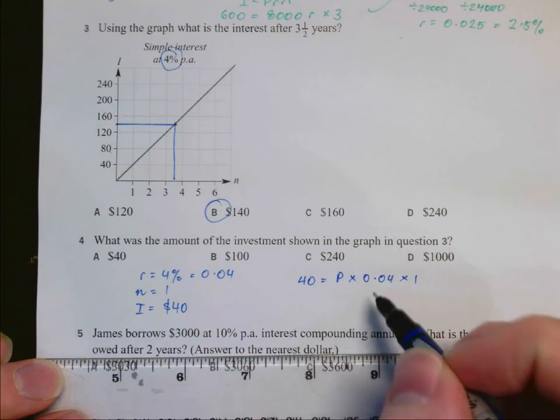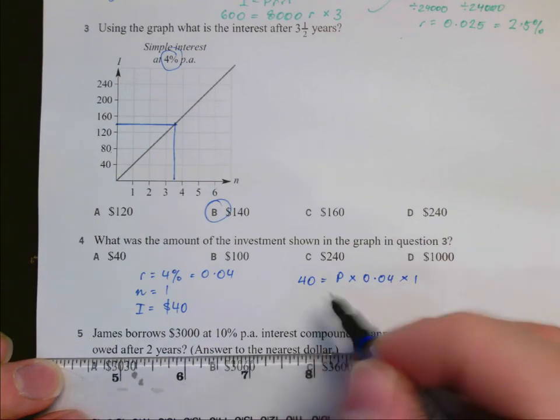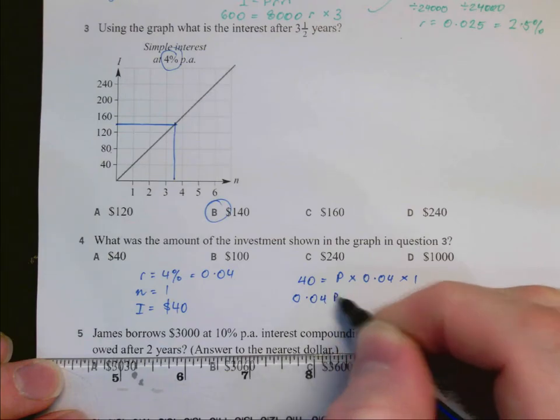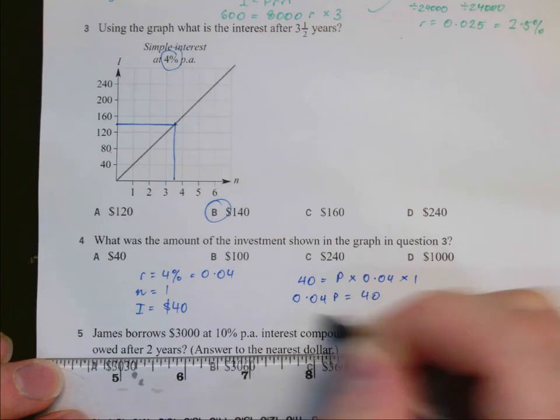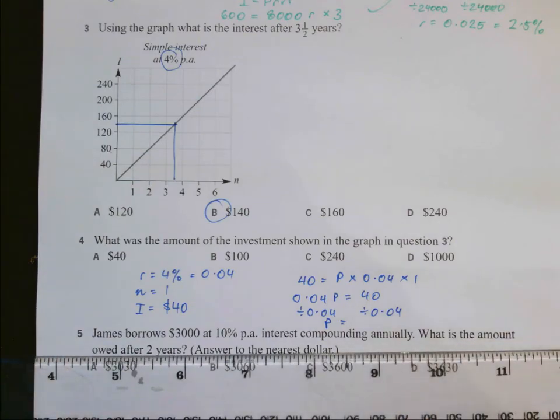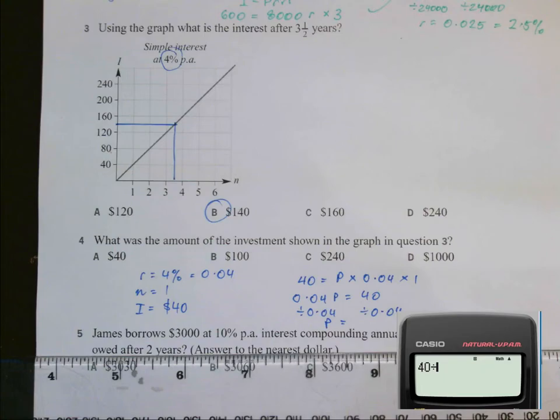So we have a little equation here. I'm going to divide both sides by 0.04, and from that we will find our answer by calculator is $1,000.